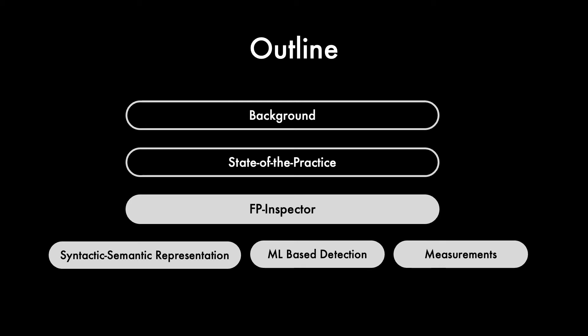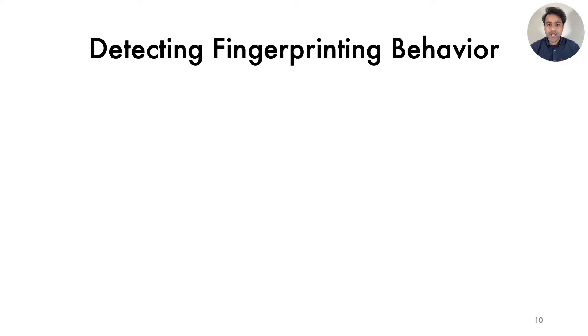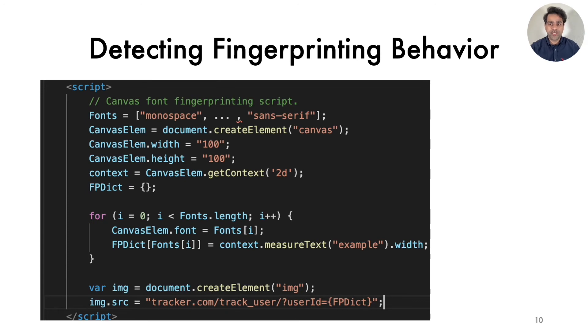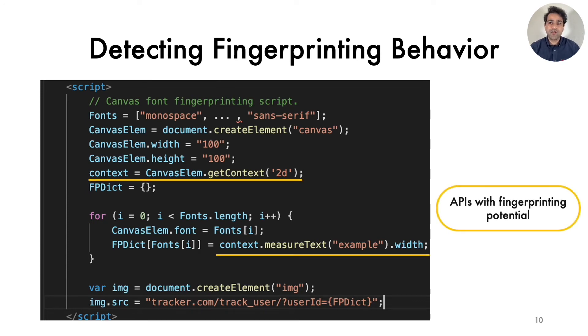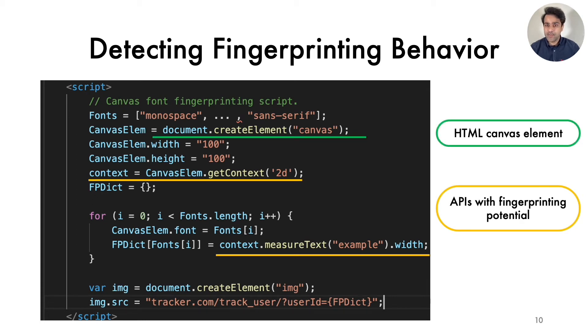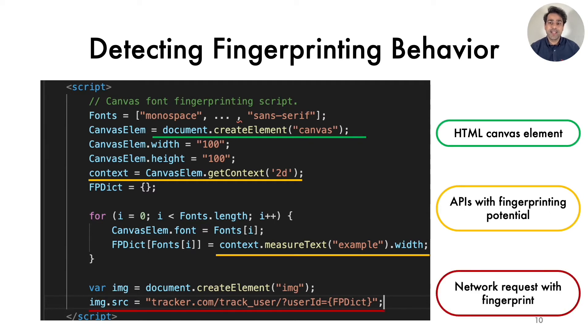To address these problems, we propose FP Inspector, which is a syntactic-semantic machine learning approach to detect browser fingerprinting. Our key idea is to use the content and execution of browser fingerprinting scripts to create a signature of their behavior, and then use those signatures to train machine learning classifiers. In this sample script, we can see several calls to JavaScript APIs with fingerprinting potential, creation of an HTML canvas element to compute the canvas font fingerprint, and then sharing of that fingerprint in a network request.